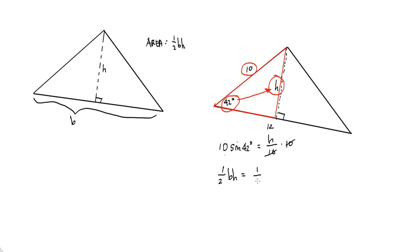So that's going to be 1/2 times, what's my base? Well, my base in the actual triangle was 12, wasn't it? 12 times 10 times the sine of 42 degrees. That's my area, isn't it? Again, 1/2 times the base, which is 12, times my height, which I already said was 10 times the sine of 42 degrees.